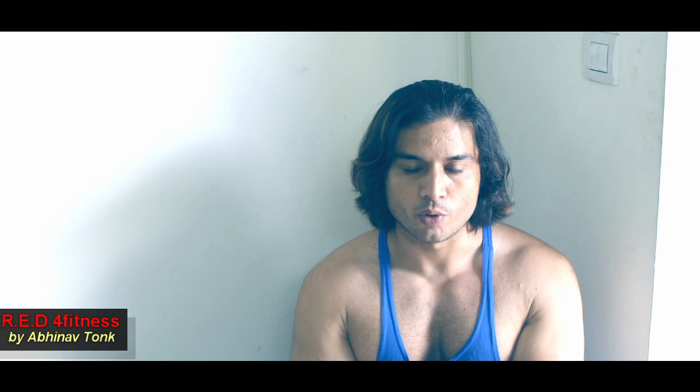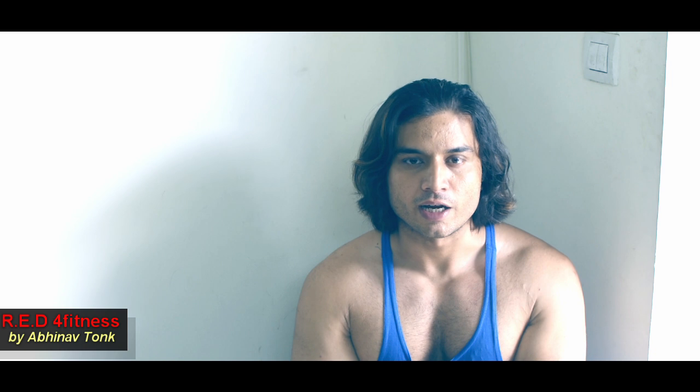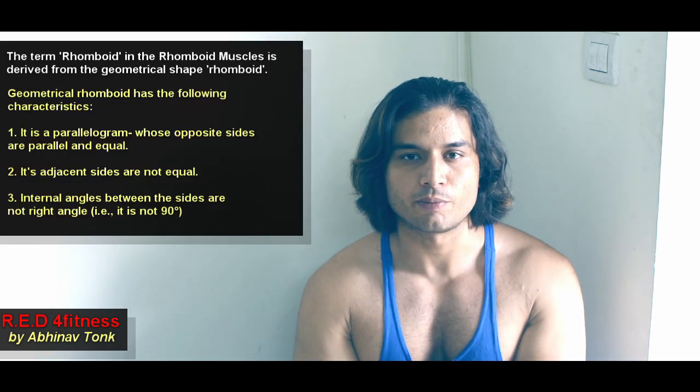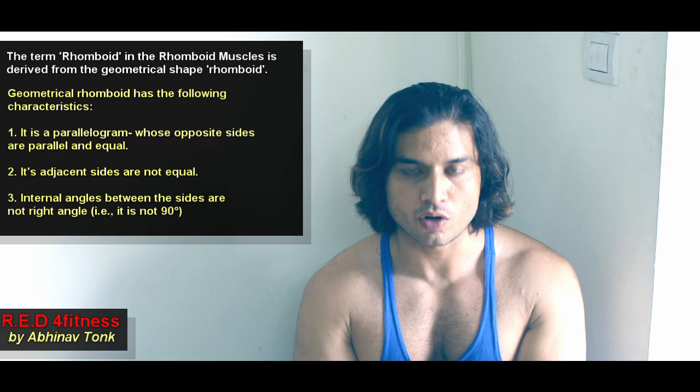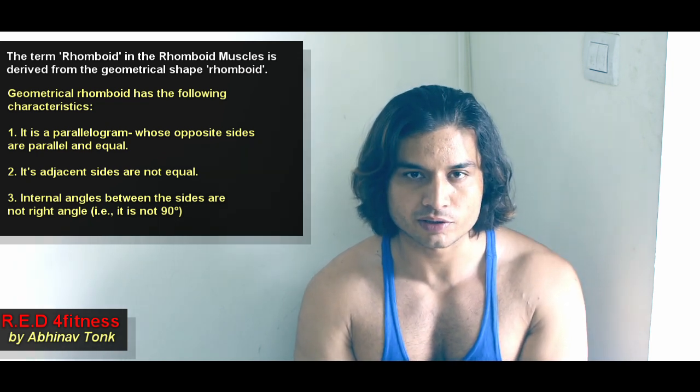The rhomboid muscle is derived from the word rhomboid, which is a geometrical shape with the following properties: first, opposite sides are parallel and equal; second, adjacent sides are unequal; and third, the internal angle between two sides is not a right angle.